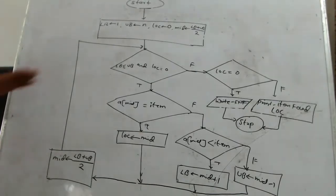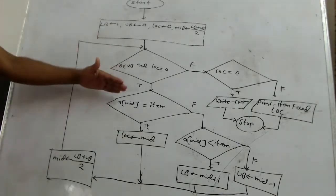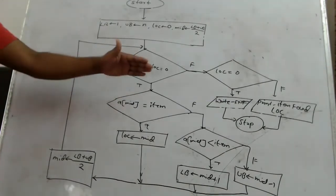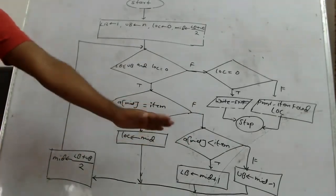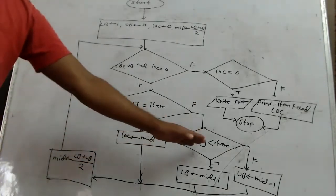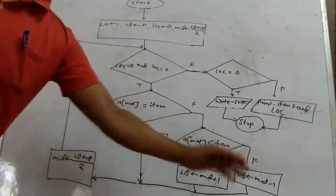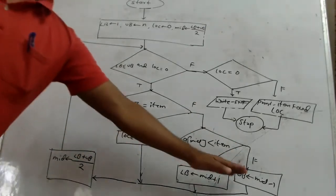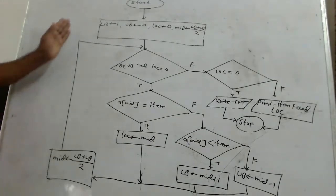फिर से examine करते हैं: first start, initialization, loop के लिए condition, उसके बाद फिर से condition है कि क्या आपका item array of mid के equivalent है। नहीं है तो उस case में आइटम को mid से compare करेंगे कि क्या वो उससे बड़ा है। अगर वो equivalent है, तो LOC को mid assign करेंगे। Else case में, अगर condition true है तो lower bound update होगा, condition false है तो upper bound update होगा। फिर loop का last step — mid फिर से calculate हो रहा है, और उसके बाद फिर से loop पे जाएंगे।